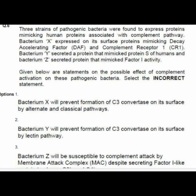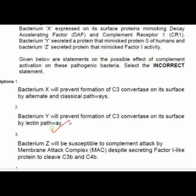Question 6 involves three strains of pathogenic bacteria expressing proteins mimicking human proteins associated with the complement pathway. Bacterium X expressed proteins mimicking DAF and CR1; bacterium Y secreted a protein mimicking Protein S; bacterium Z secreted a protein mimicking Factor I activity. The incorrect statement is option 2: bacterium Y will prevent formation of C3 convertase on its surface by the lectin pathway.